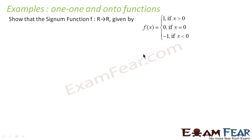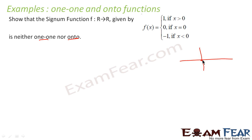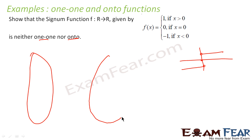Let us take one more example. We have to show that the signum function is again neither one-one nor onto, similar to what we have solved earlier. If you remember the graph of the signum function: for 0, it is 0; for any number greater than 0, it is 1; for any number less than 0, it is -1. In our case, this is from R to R, so the output can only be 0, 1, and -1.